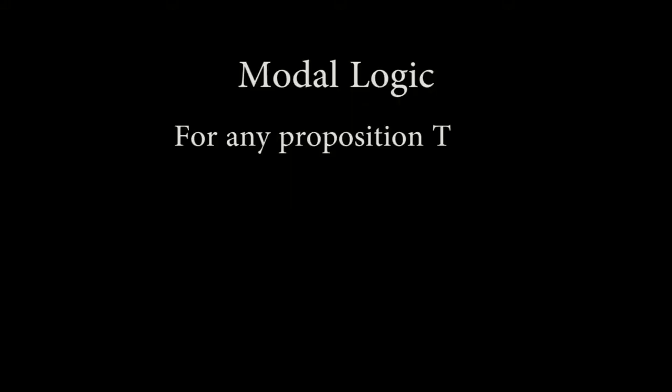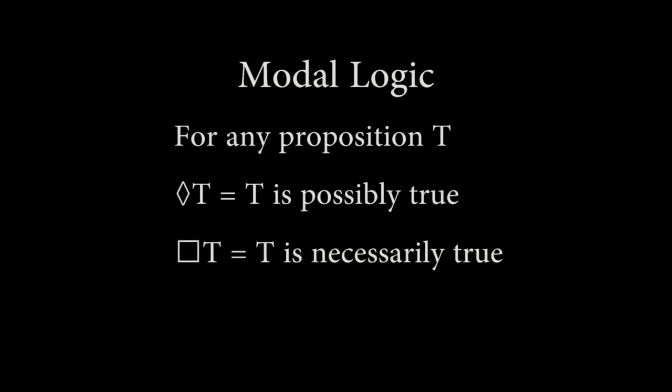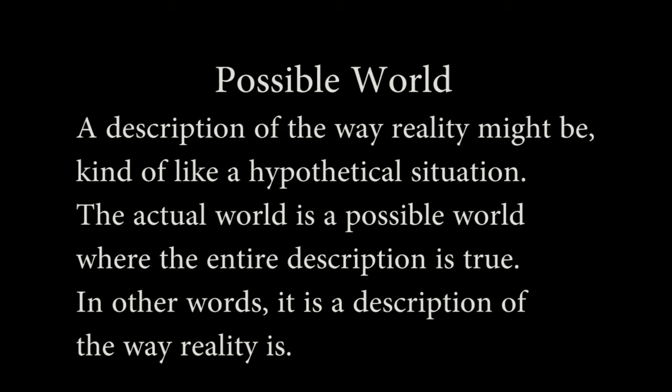So let's go through a recap of modal logic. Modal logic is a formal logic which adds two additional truth qualifiers. Something can be true, something can be possibly true, and something can be necessarily true. The diamond denotes possibility, and the box denotes necessity. Modal logics use a semantic called possible worlds. A possible world is a description of the way reality might be, kind of like a hypothetical situation. The actual world is a possible world where the entire description is true — the description of the way reality is.